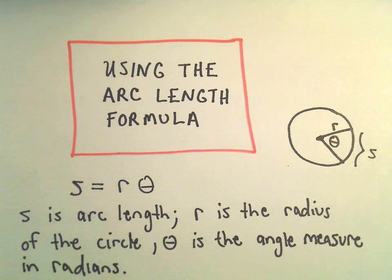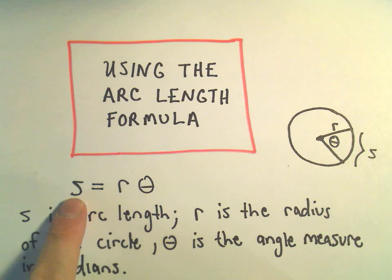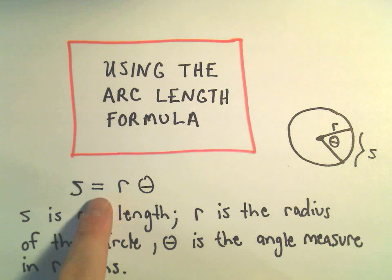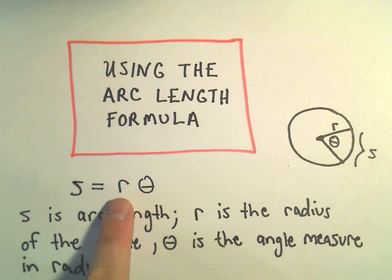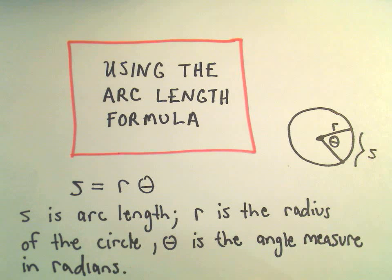Alright, this video is going to be about using the arc length formula. The arc length formula basically says S, which represents the arc length, is equal to R times theta. R is going to be the radius of the circle, and theta is going to be the angle measure, but it's got to be in radians.